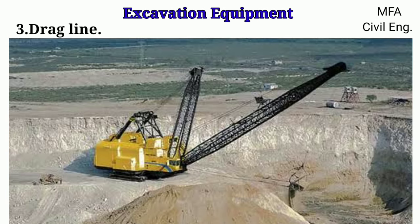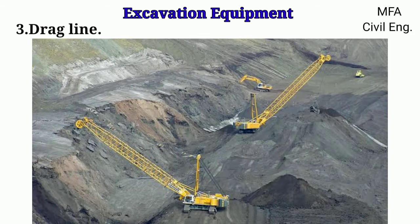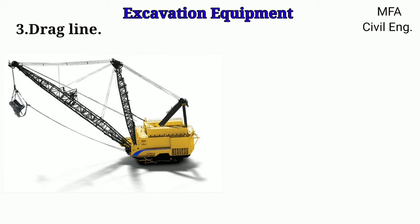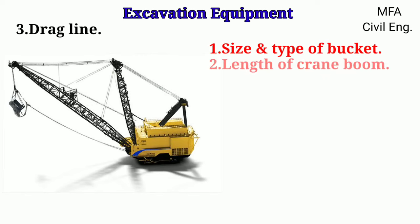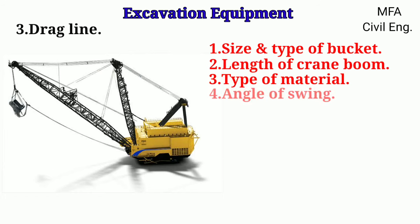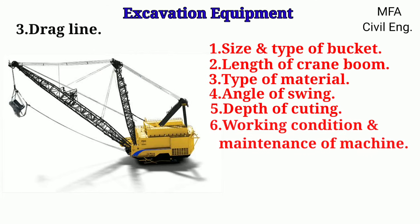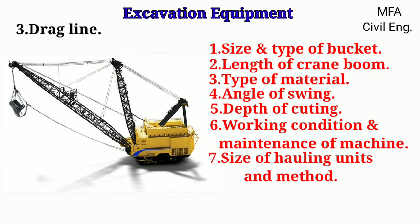The boom is then swung back to the digging position and the same cycle of operations is repeated. Dragline is the most suitable machine for digging soft materials and below its track level. It is very useful for excavating trenches. The output of the dragline depends on the size and type of buckets, length of the crane boom, type of materials, angle of swing, depth of cutting, working conditions, maintenance of the machine, size of hauling unit, and skill of the operators.